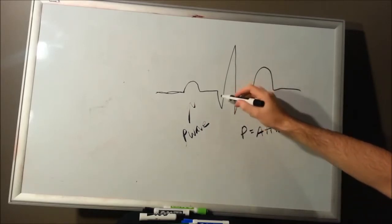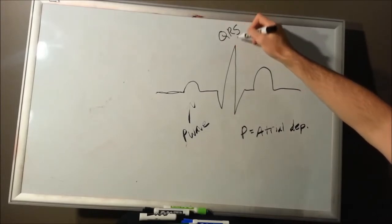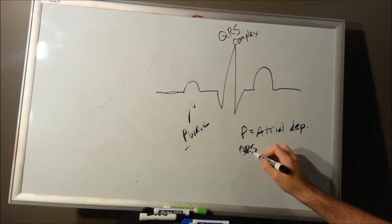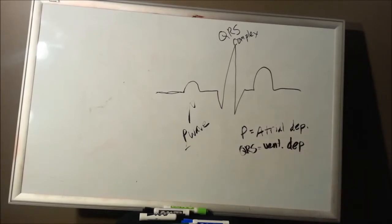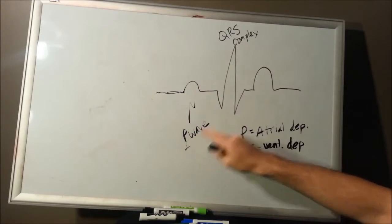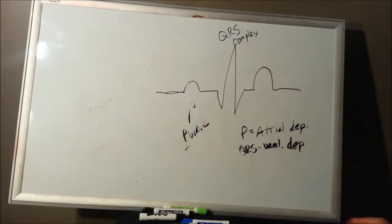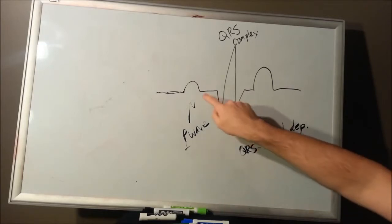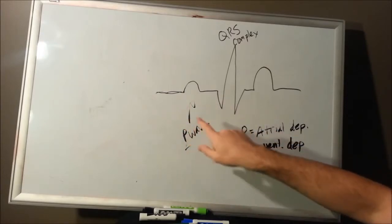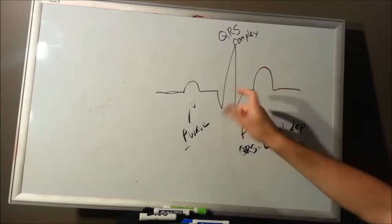Next, you're going to have a QRS complex. The QRS complex represents your ventricles depolarizing. There's a little time between your atria contracting and your ventricles contracting — that allows your atria to pump blood into your ventricles. That small pause is thanks to the conduction system: your AV node and Bundle of His slow down that action potential, giving time for your atria to contract, then your ventricles to contract.